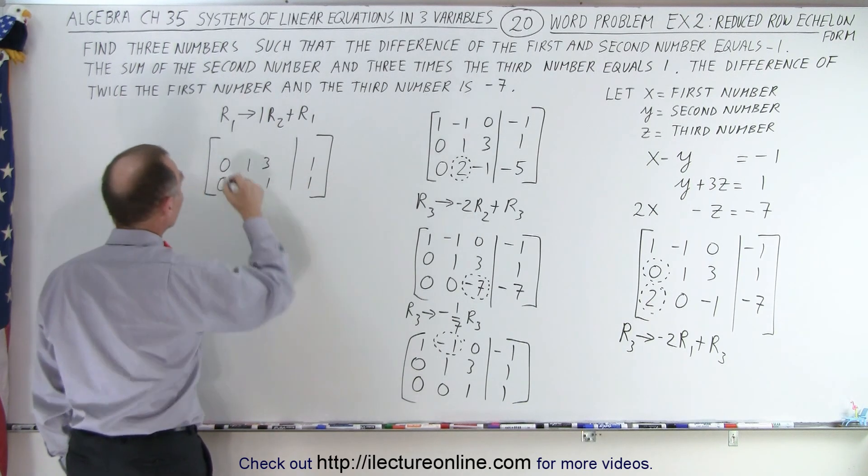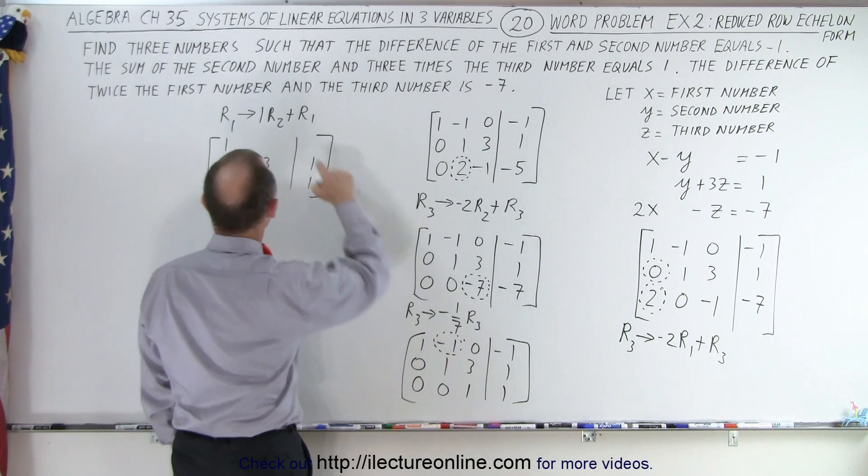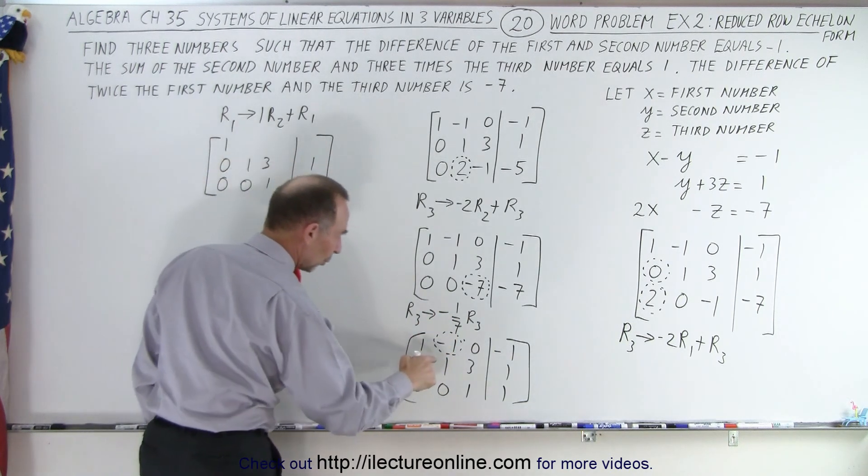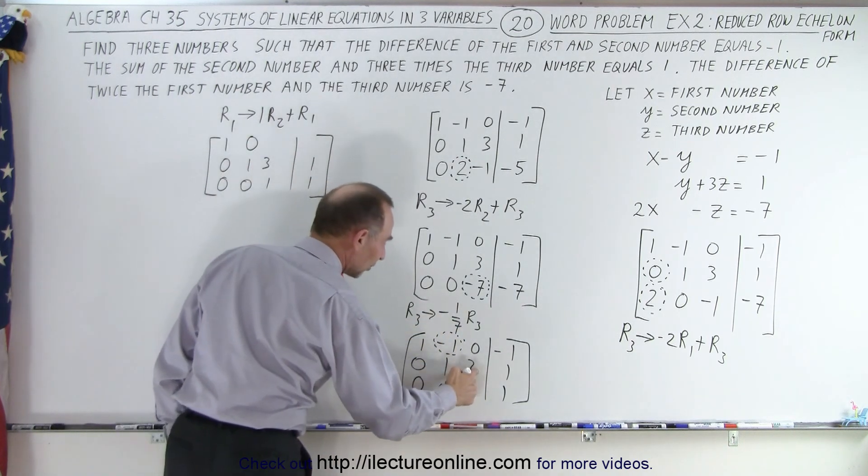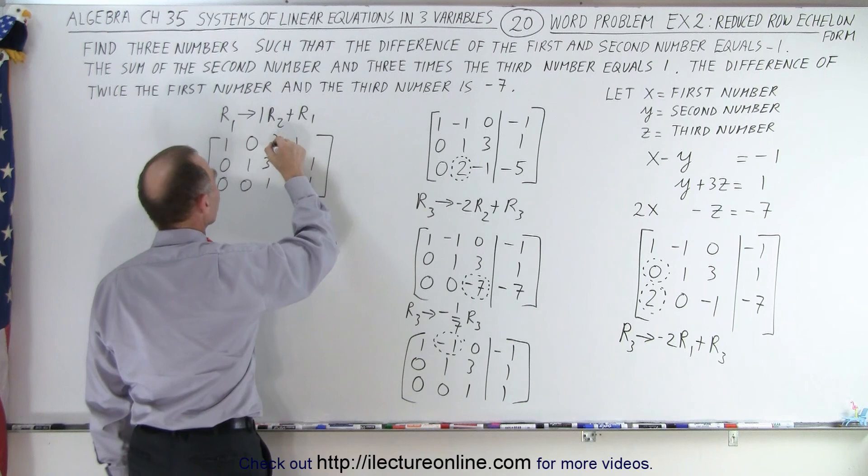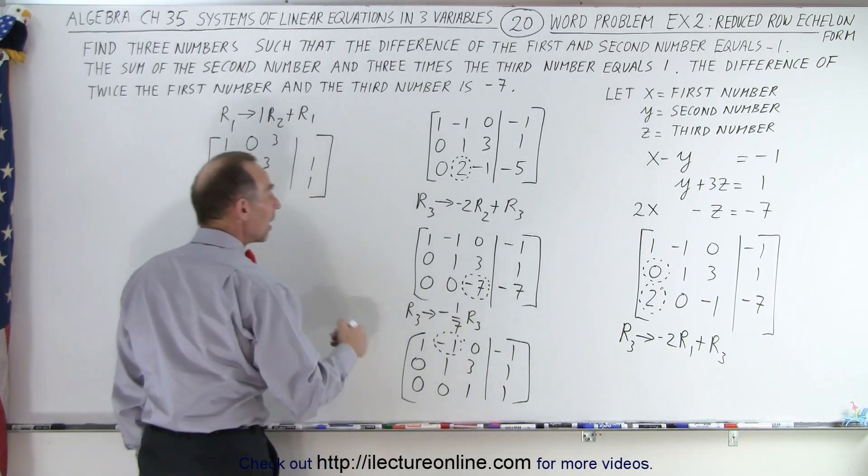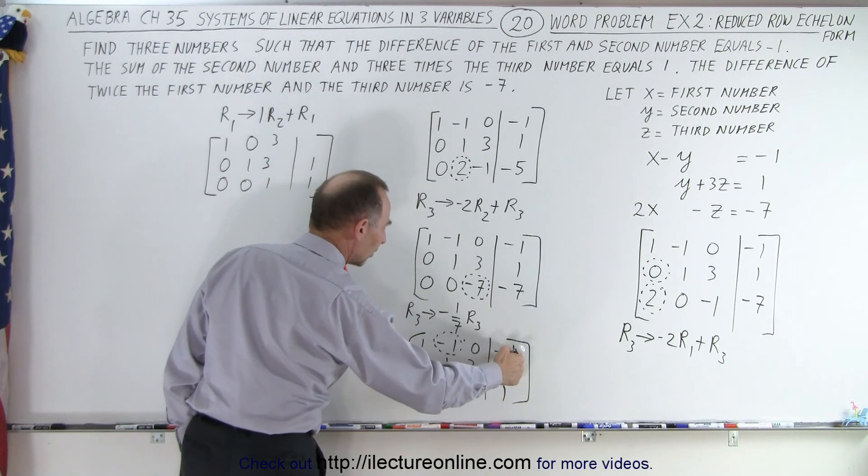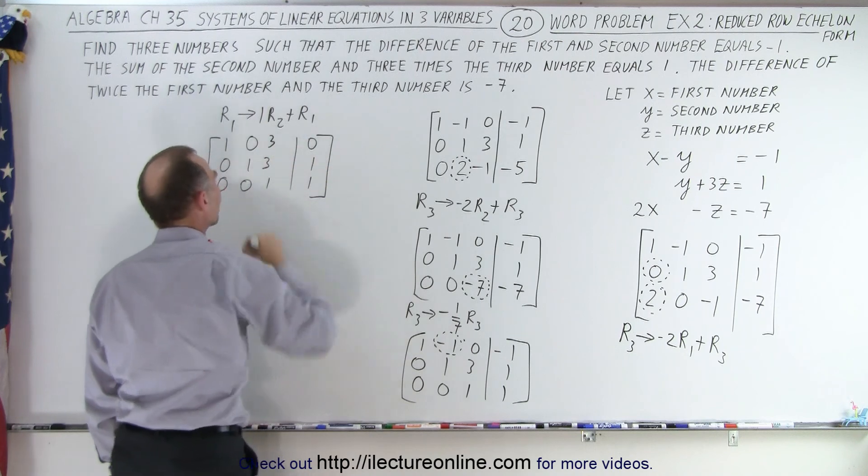But on the first row, this remains a one. One times R2. So one times one added to this gives me zero. One times three added to zero gives me three. One times one added to negative one gives me zero. So this is a three and this becomes a zero.